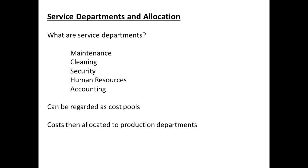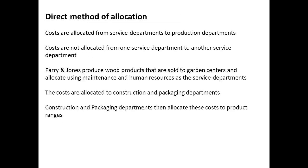Many firms will group the departments into production departments and service departments. Service departments provide services to production departments, and the charges for the services are allocated. Examples of service departments include maintenance, cleaning, security, human resources, and accounting. Under the direct method for allocation, the costs are allocated from service departments to production departments. Costs are not allocated between service departments.